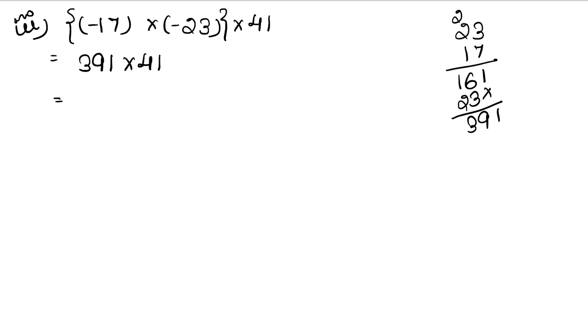Now 391 × 41. Multiply: 1×391 is 391. Then 4×1 is 4, 4×9 is 36 carry 3, 4×3 is 12, 13, 14, 15. Adding: 1, 9+4 is 13 carry 1, 3+1 is 4, 4+6 is 10 carry 1, 5+1 is 6. So the answer is 16031.